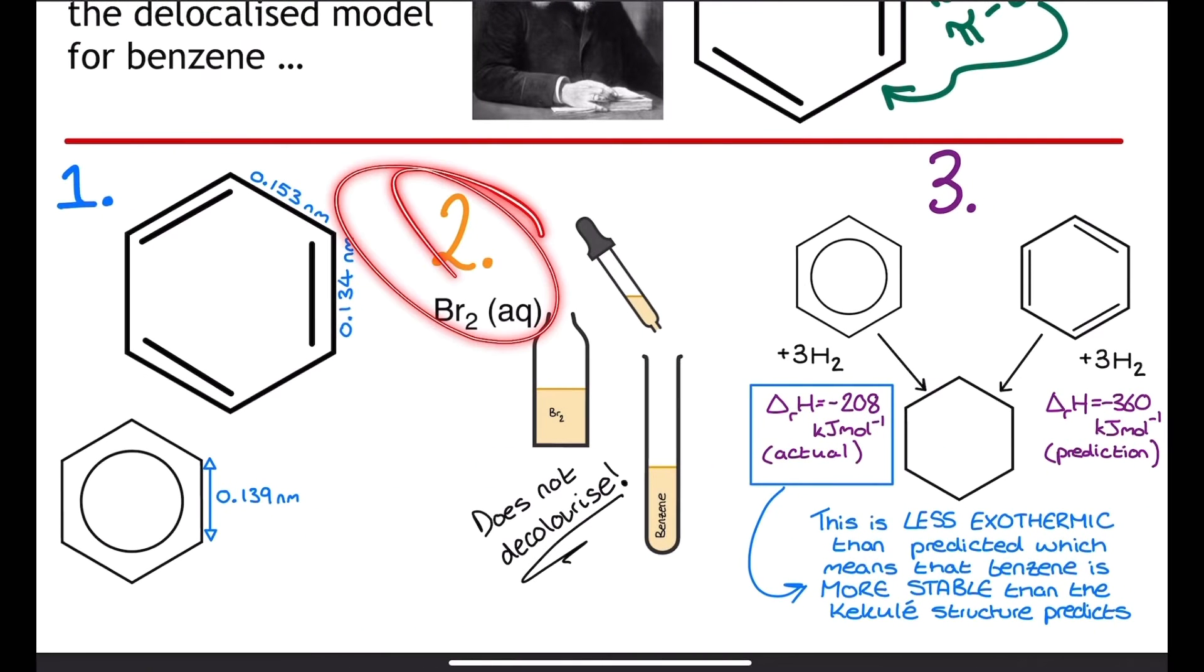Our second piece of evidence takes us right the way back to the alkenes topic. Now in the alkenes topic we saw that if a molecule contains carbon to carbon double bonds like Kekulé suggested benzene did, then it will decolorize bromine water. So if Kekulé was correct, benzene should decolorize a few drops of bromine water when they're added to a test tube of benzene.